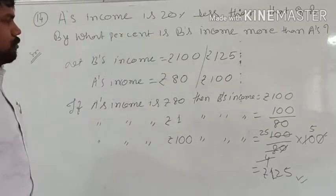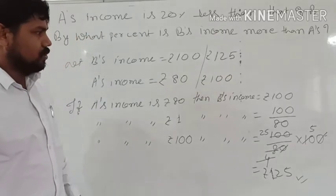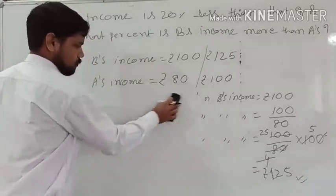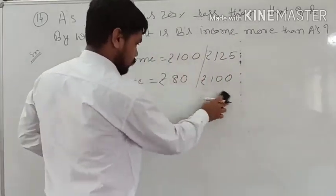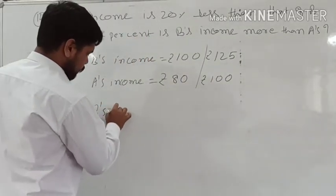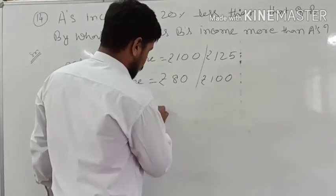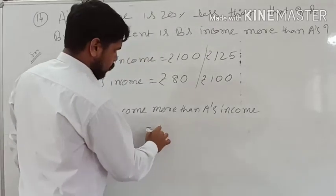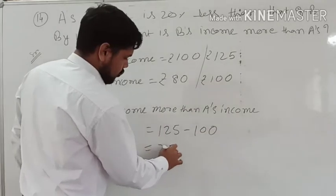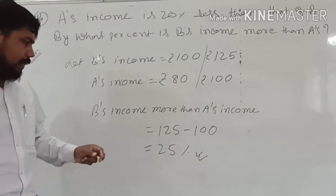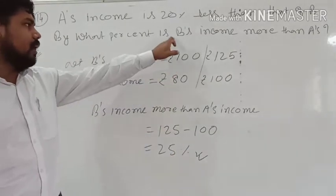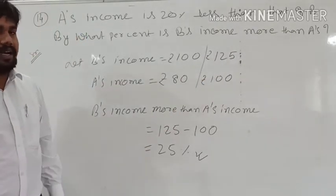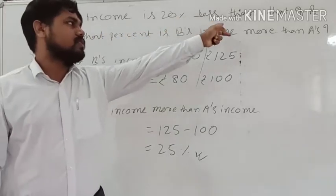So now, to find the percentage increase: B's income more than A's income equals 125 minus 100, that is 25%. So we can say B's income is 25% more than A's income. Many people without calculation might say 20% directly, but 20% is not correct — 25% is the correct answer.